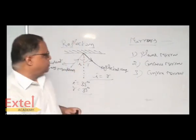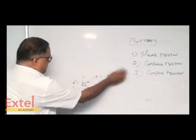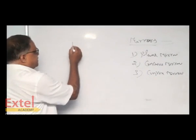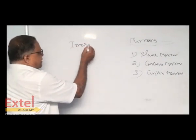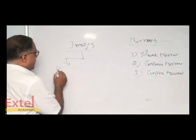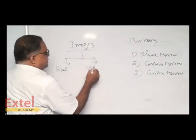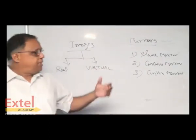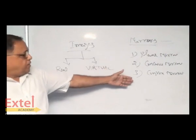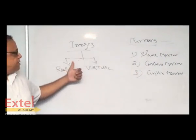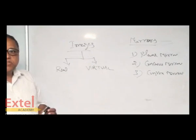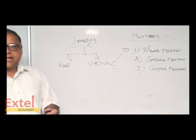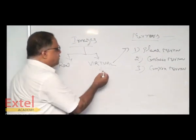The plane mirror always produces a virtual image. Before that I will discuss two types of images. The images can be classified into real and virtual. These are the two images that form based on plane mirror, concave mirror, and convex mirror. As per the plane mirror is concerned, it will always produce only the virtual image. The virtual image cannot be caught on a screen.